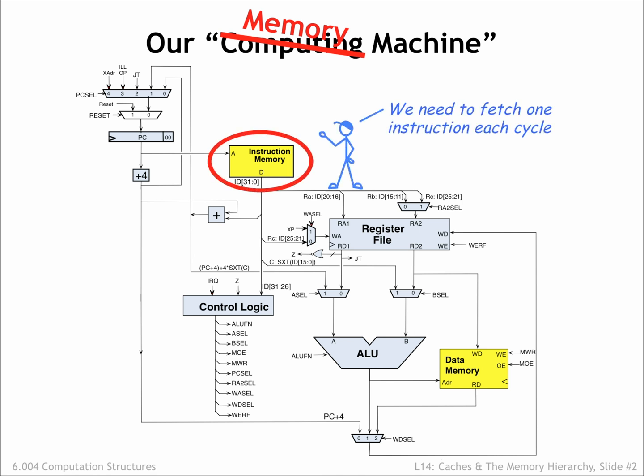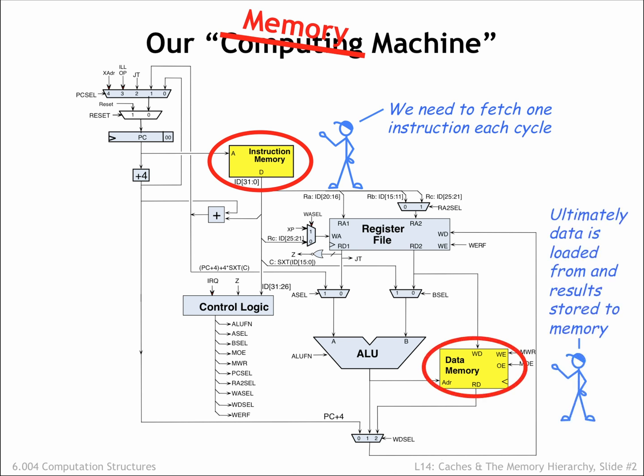The execution of every instruction starts by fetching the instruction from main memory, and ultimately all the data processed by the CPU is loaded from or stored to main memory. A very few frequently used variable values can be kept in the CPU's register file, but most interesting programs manipulate much more data than can be accommodated by the storage available as part of the CPU datapath.